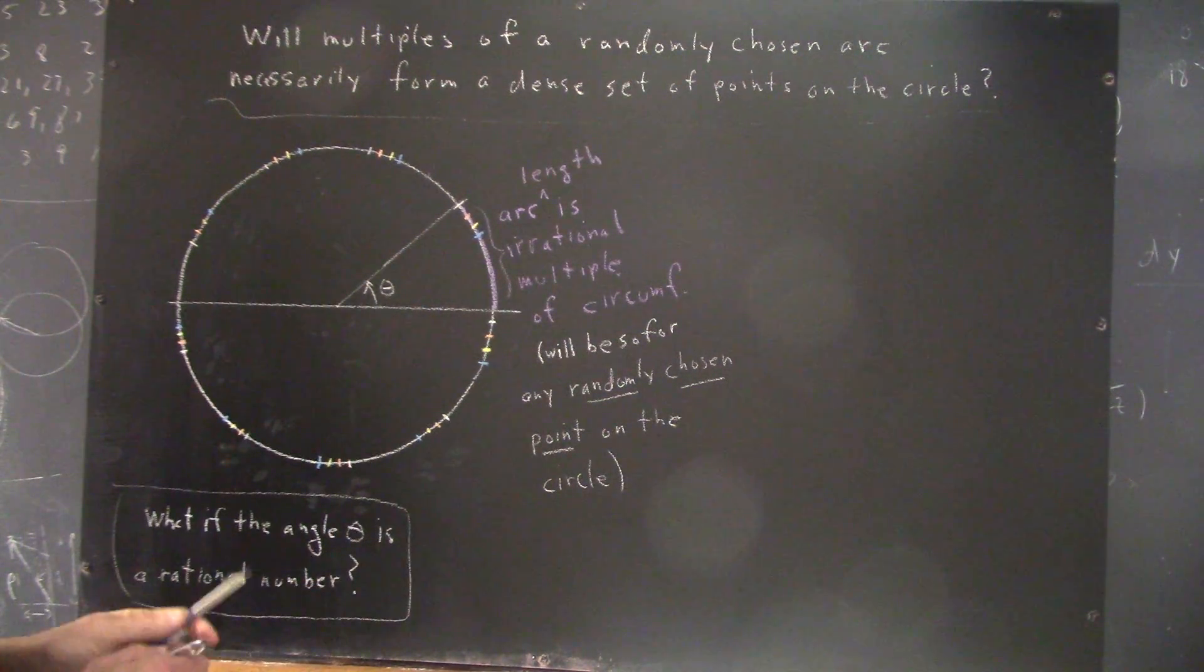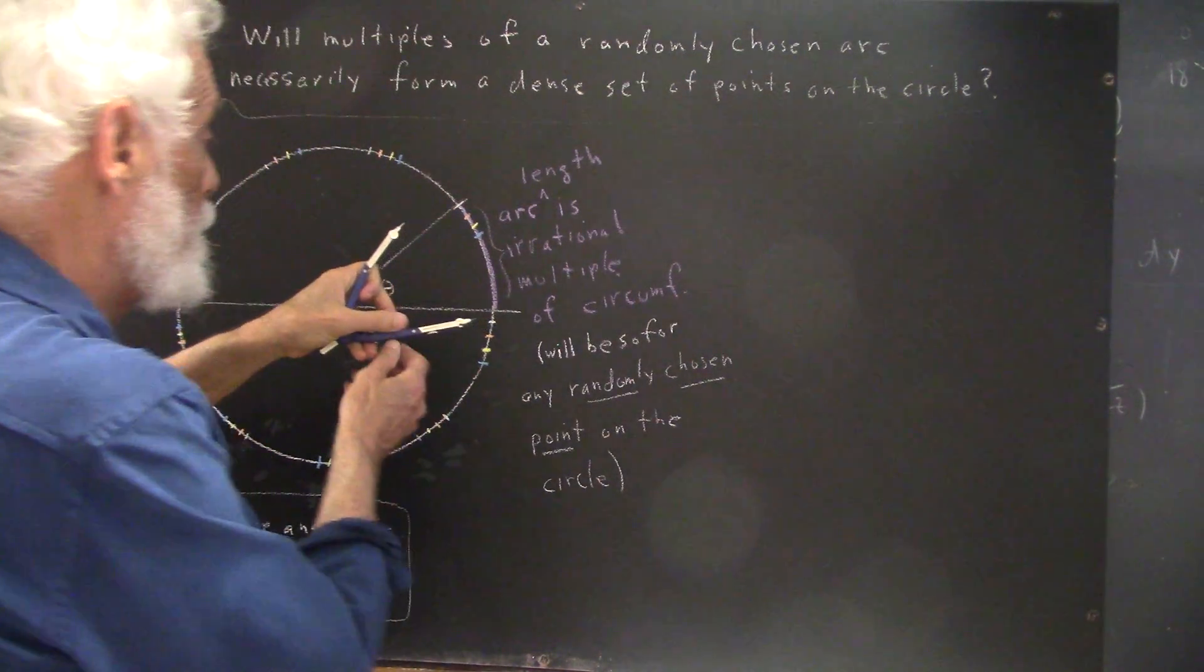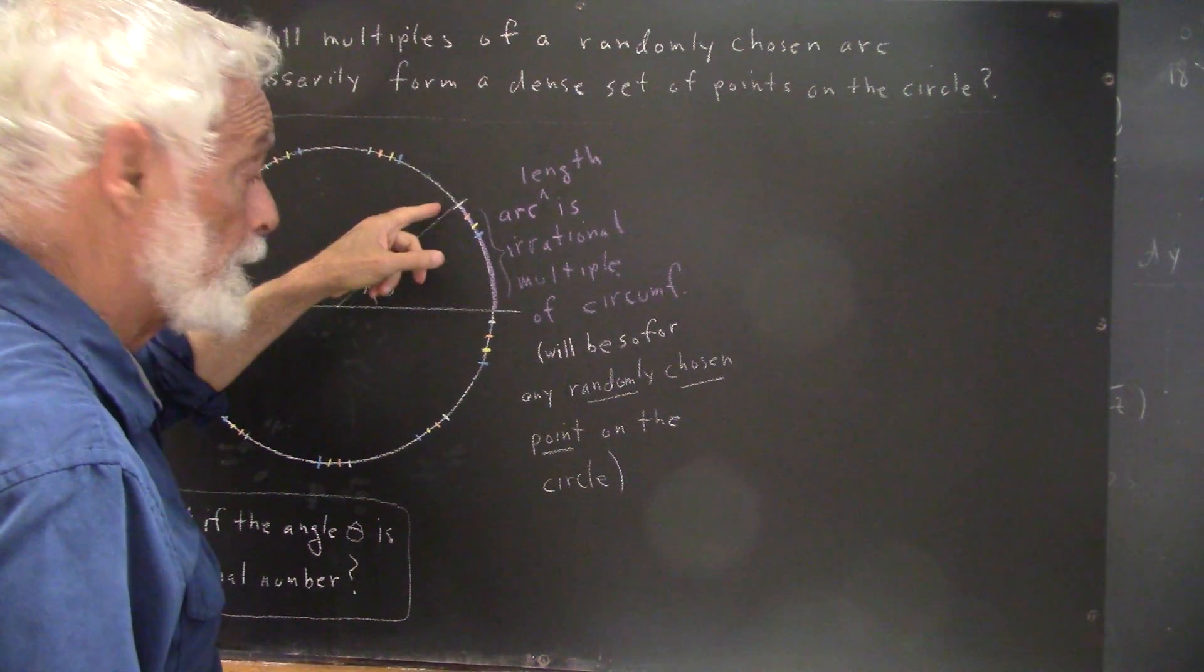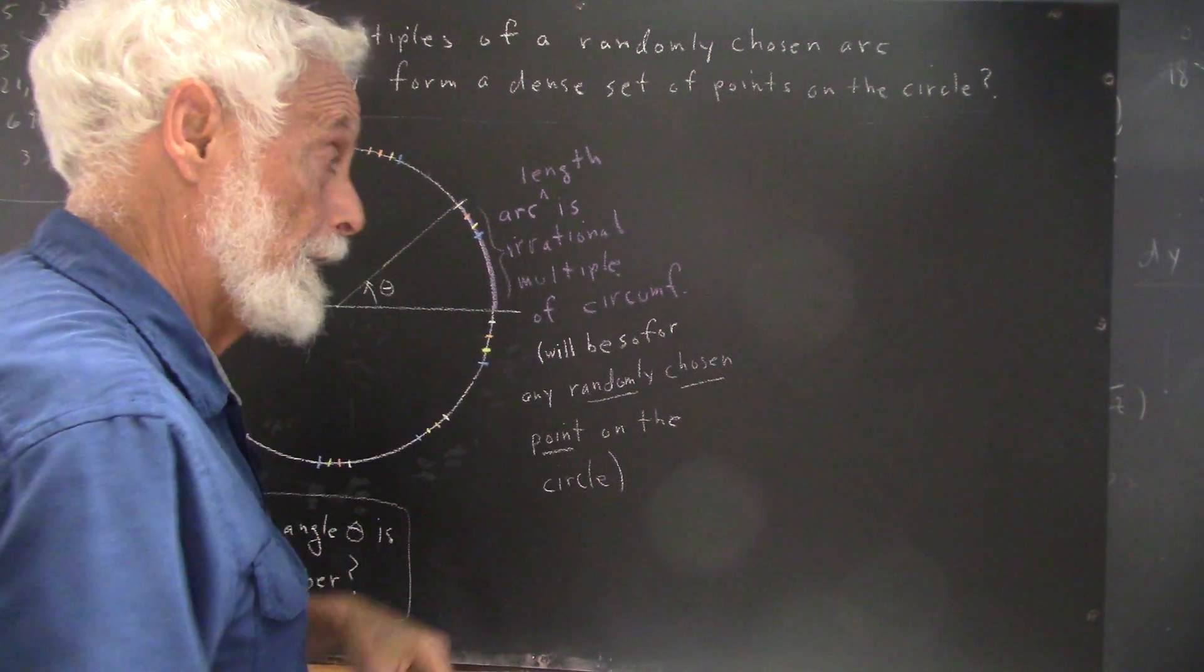Really impossible to do that, but if you could, that would be the case. So, what we can then assume is that this arc is an irrational multiple of the circumference.